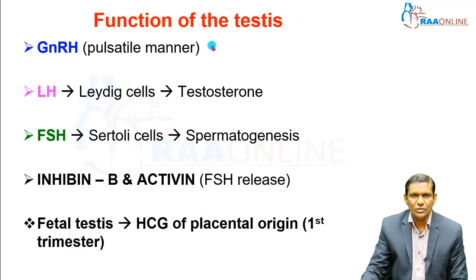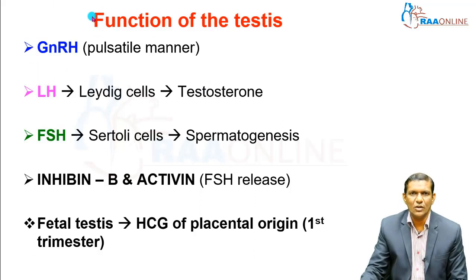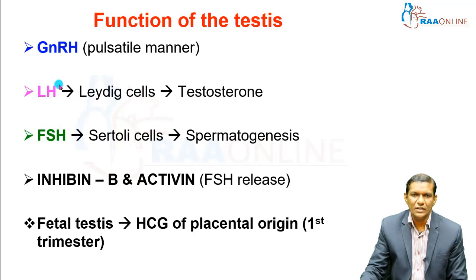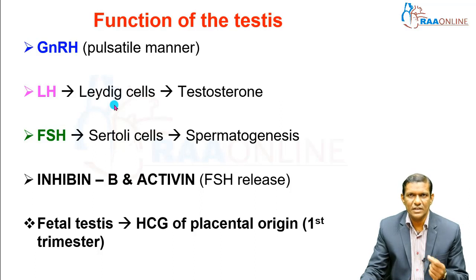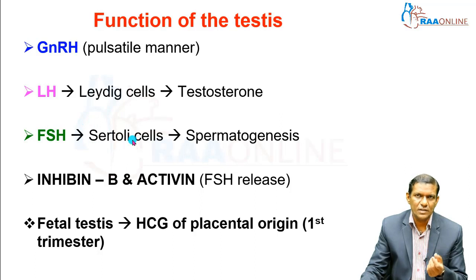Next is the function of the testis and the hypothalamus-pituitary-testicular axis. The hypothalamus releases gonadotropin-releasing hormone in a pulsatile manner — not continuously. This GnRH acts on the pituitary gland, causing synthesis and release of LH (luteinizing hormone) and FSH (follicle-stimulating hormone). LH acts on Leydig cells and is responsible for testosterone release, while FSH acts on Sertoli cells and seminiferous tubules, driving spermatogenesis and sperm maturation.